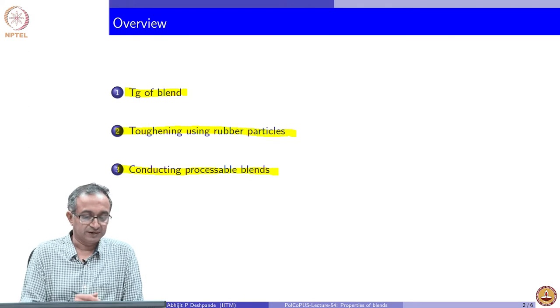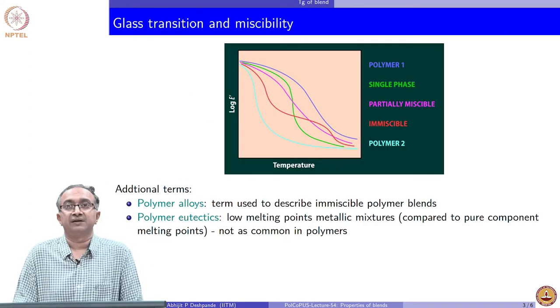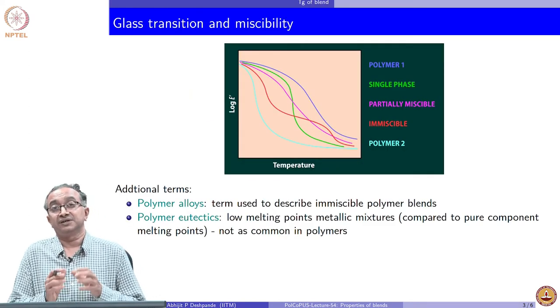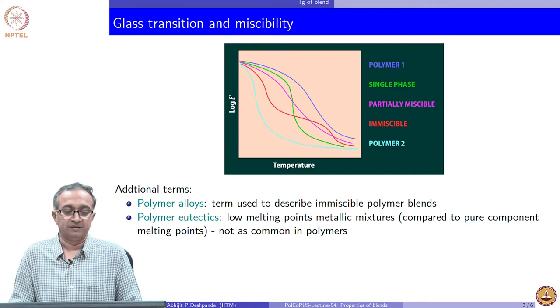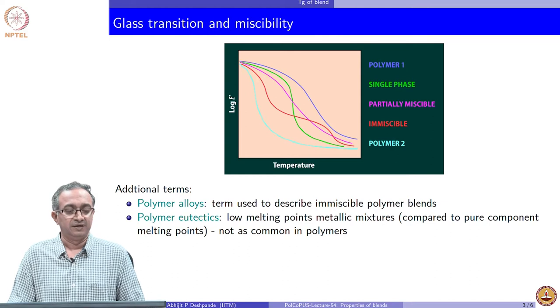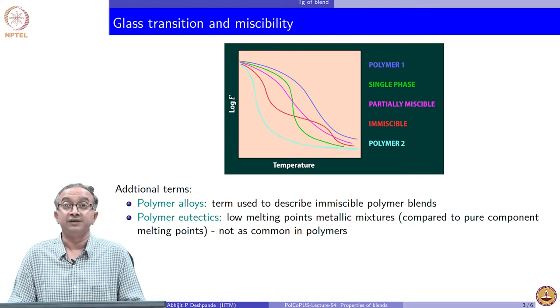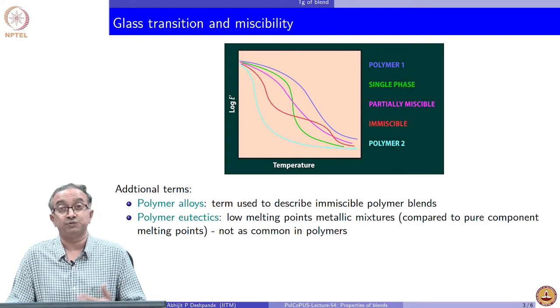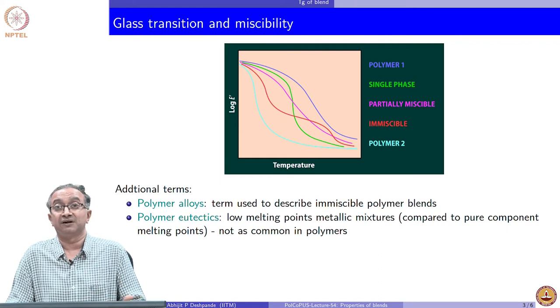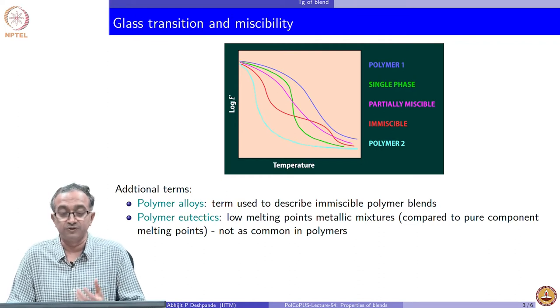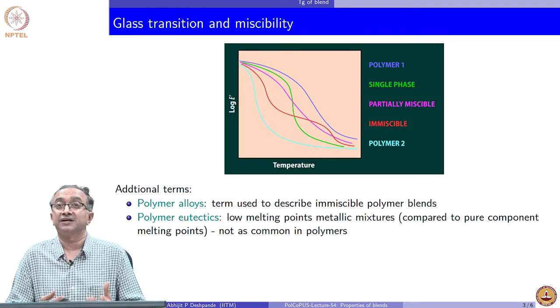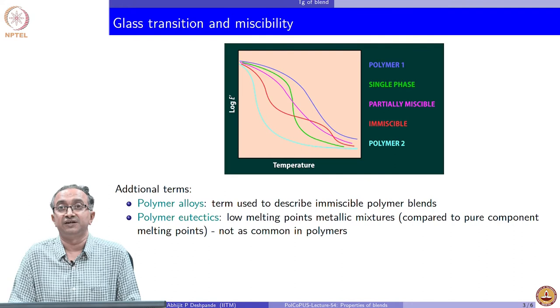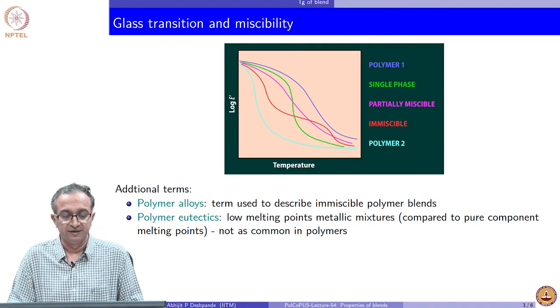Let us look at glass transition and miscibility. Glass transition measurement is a very good way of determining the miscibility and this could be done by measuring either the E prime as shown here, the loss modulus changes when material undergoes glass transition. We could also measure it using DSC where we measure the glass transition as a step change in the heat flow curve as discussed earlier.